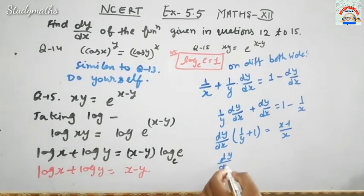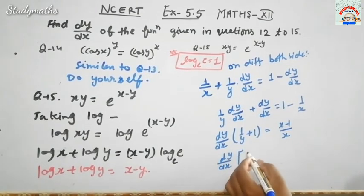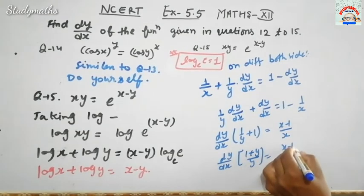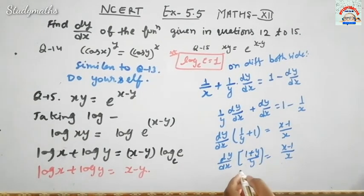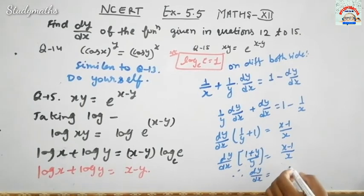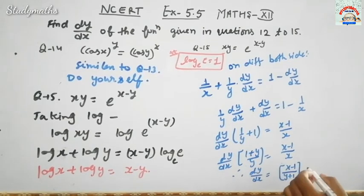So इधर भी LCM कर लीजिए. dy by dx in bracket, 1 plus Y upon Y, equals X minus 1 upon X. Therefore, dy by dx equals X minus 1 upon Y plus 1 into Y by X.